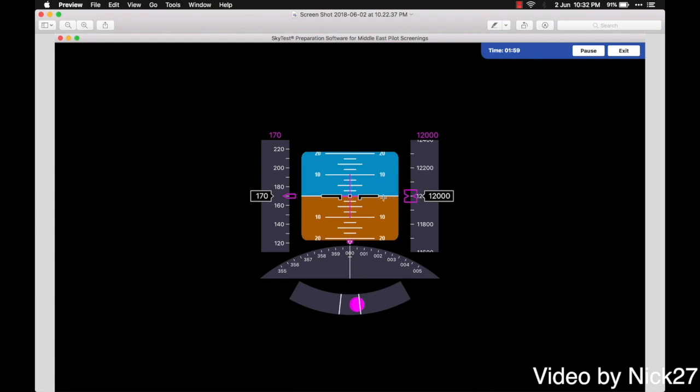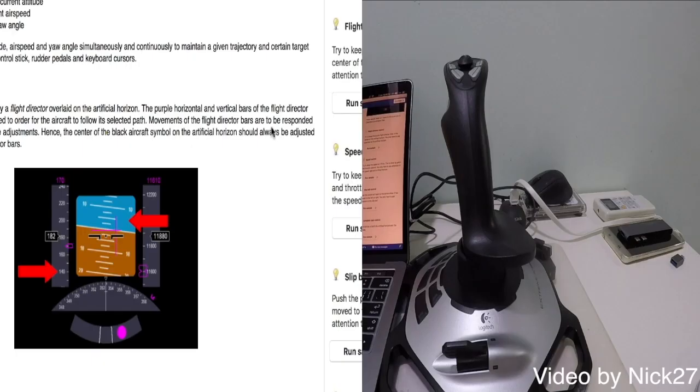So what we have to do is basically use the joystick and keep our plane aligned to this purple-magenta cross. And so I will now demonstrate the basic controls.